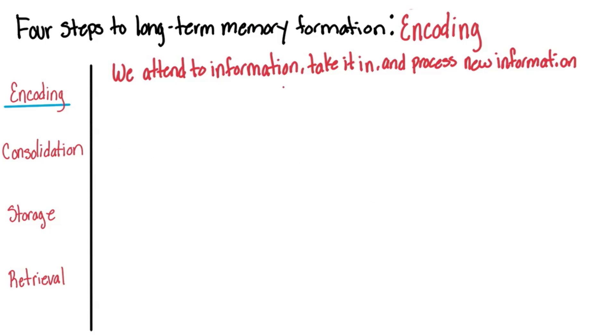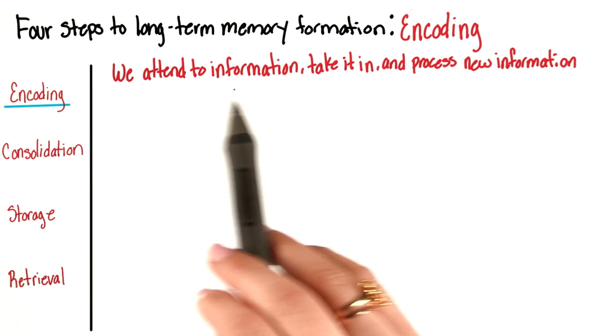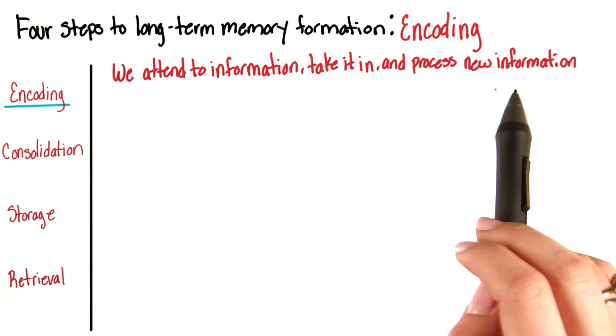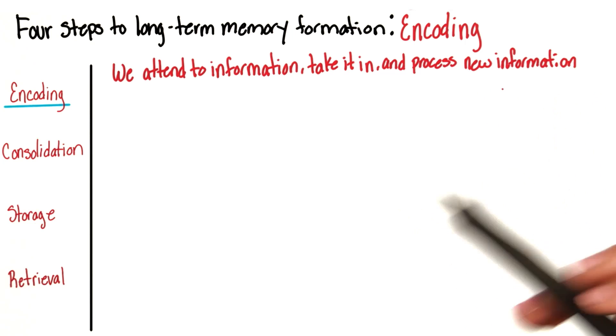This means that we attend to new information, we take it in, and then we process the new information. So our brain focuses on something new, takes it in, and we process that information. That is us encoding new information.